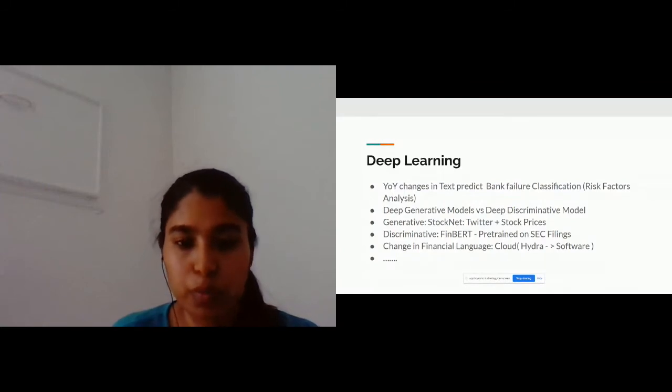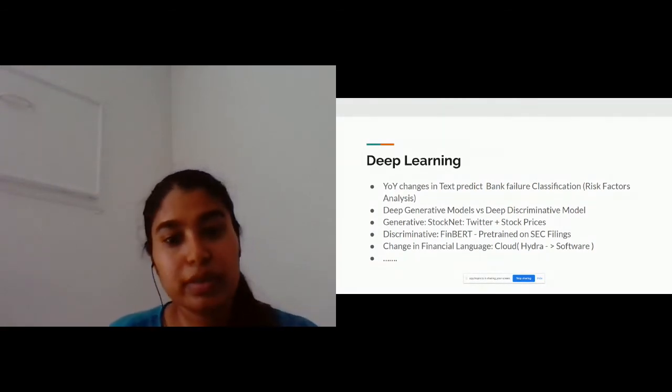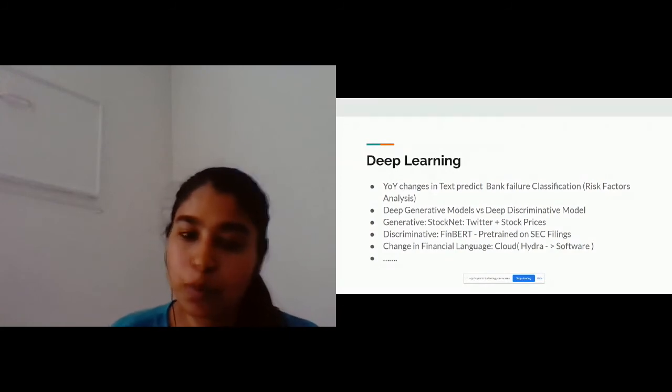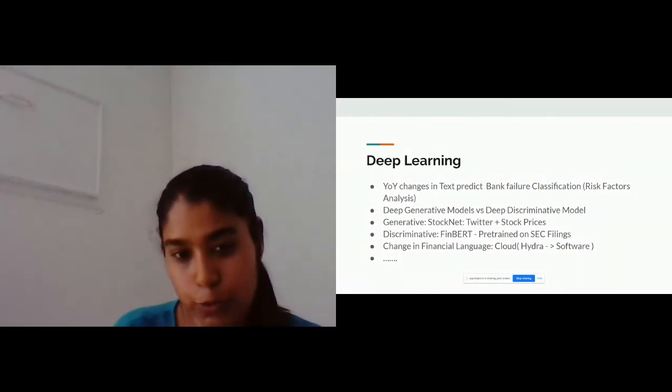This era saw growth in both generative and discriminative models. On the generative side, StockNet came into the picture, which used latent variables to predict stock prices using Twitter and stock prices. This is a very well-known paper on the generative side, and explaining it is out of scope of this talk, so I would direct the users to have a look at this paper.